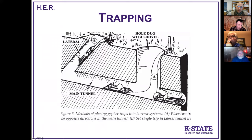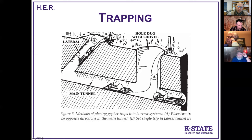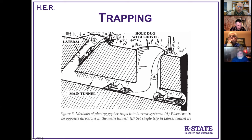When trapping pocket gophers, find those long lateral runs, dig a hole down to the run with a shovel, and set one pocket gopher trap facing each direction — a pocket gopher comes in, hits the trigger, pushes forward, and the two pinchers grab it. It's a directional trap, so you need one set each way. Wire the traps to a stake so a gopher can't drag them off. You can also catch them in runs leading up to the mounds, but those can be less effective than the longer lateral runs.